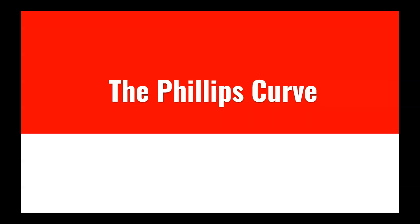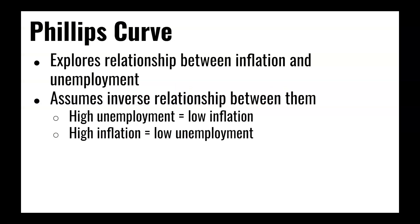The Phillips Curve is a tool used in economics to look at the connection between the unemployment rate and inflation. It has an inverse relationship in that high unemployment is typically associated with low inflation, and high inflation is typically associated with low unemployment. If you're in an inflationary gap situation, lots of people are employed but prices are rising, versus if you're in a recessionary gap, where there is low inflation but high unemployment.